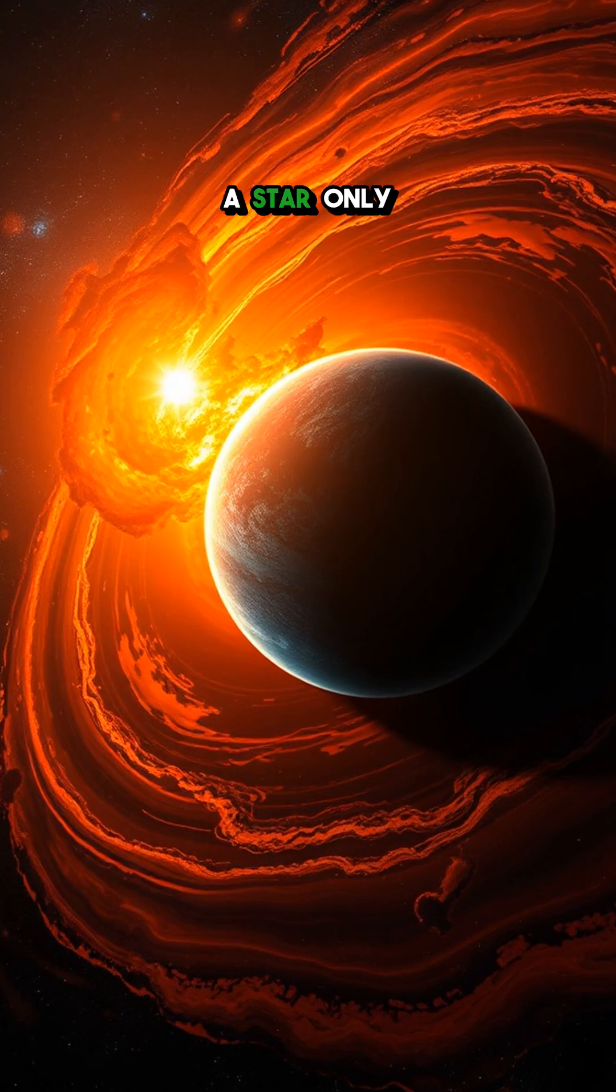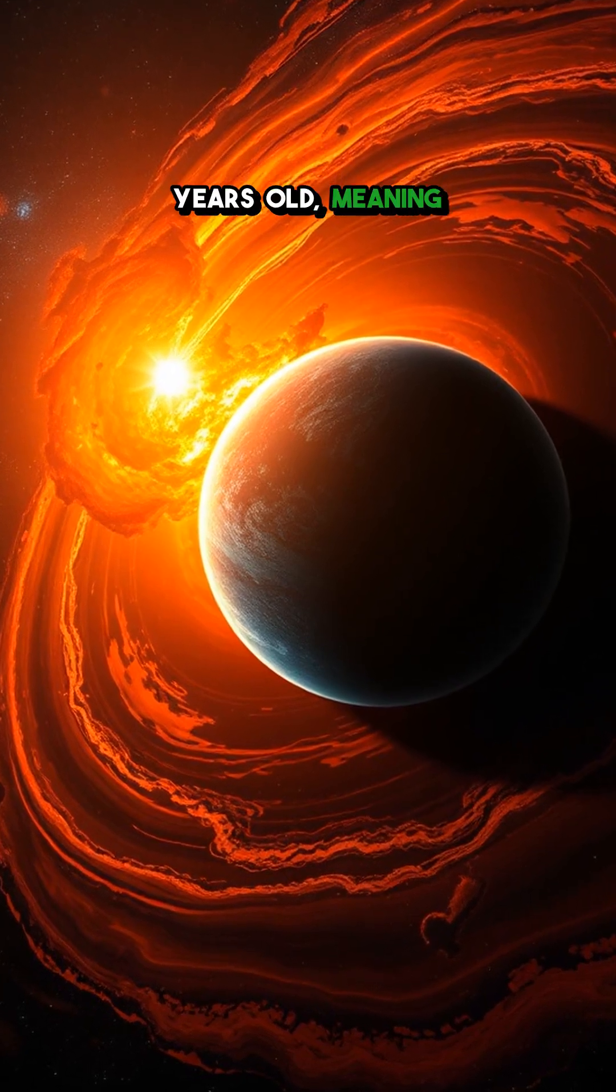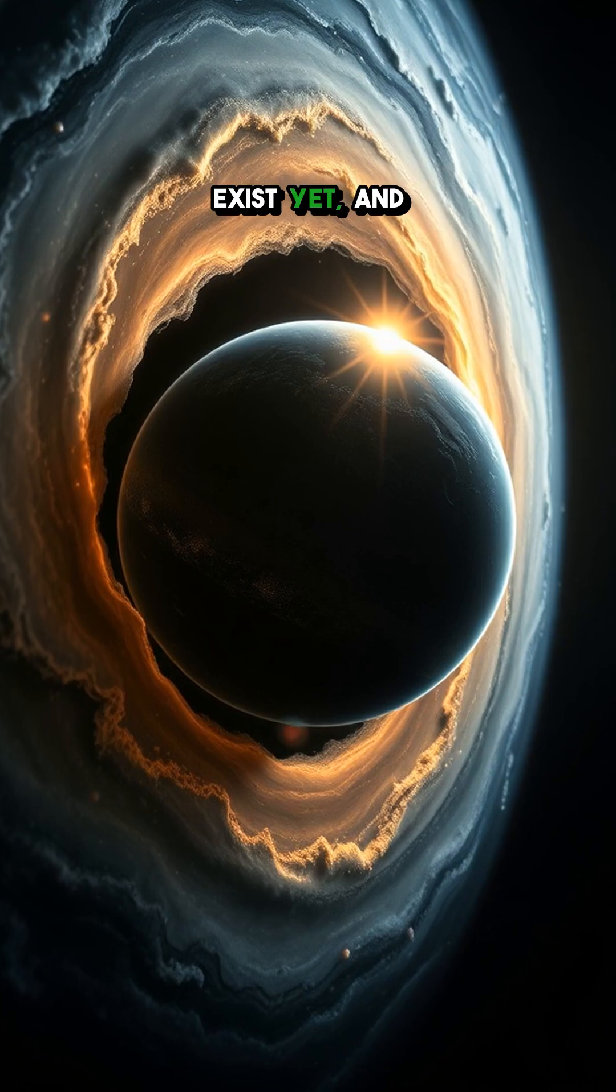Fact four, this baby planet orbits a star only a few million years old, meaning when dinosaurs roamed Earth, this system didn't even exist yet.